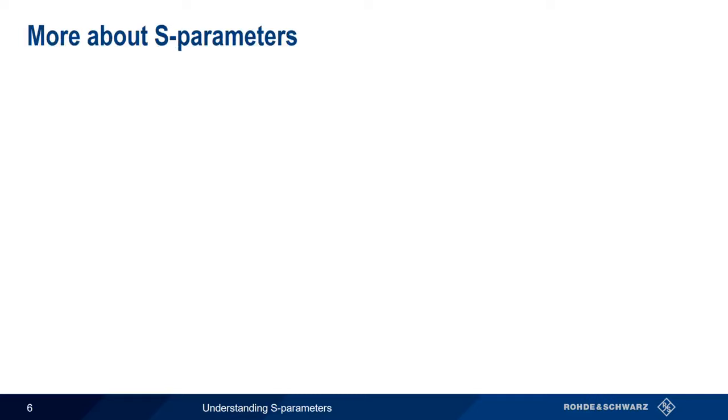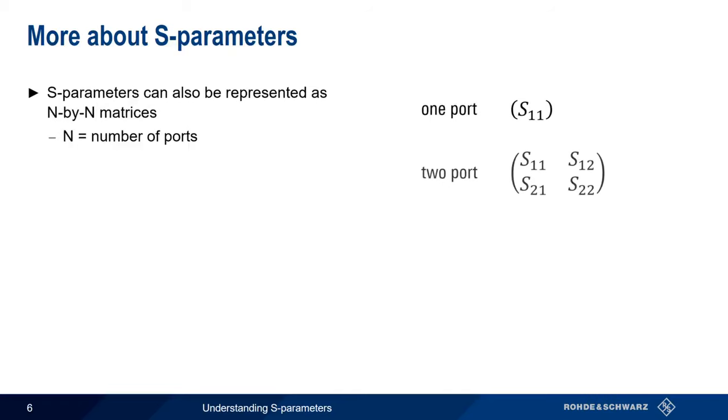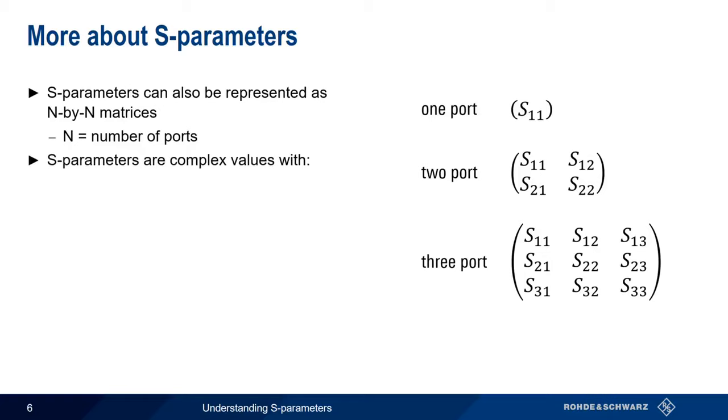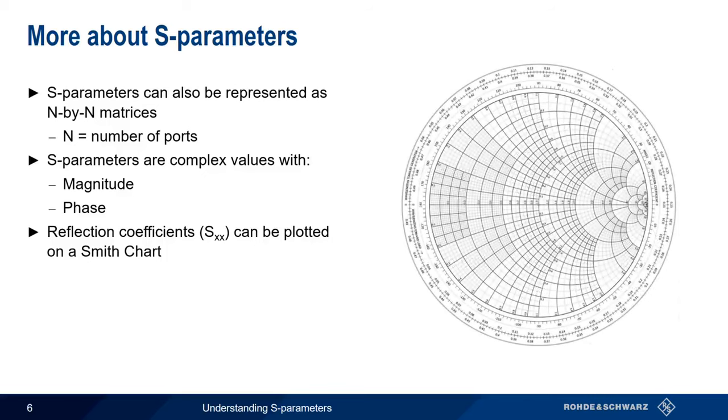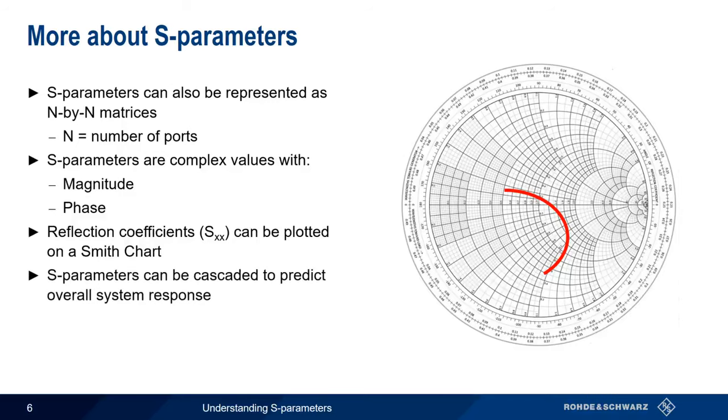There are a few other useful things to know about S-parameters. First, S-parameters are sometimes represented in the form of square N by N matrices, where N is the number of ports. For example, one port, two ports, and three ports. It's also important to remember that S-parameters are complex values, consisting of both a magnitude and a phase. The reflection coefficients, such as S11 and S22, are often plotted on a special graph called a Smith chart. And one of the main advantages of using S-parameters is that S-parameters of individual devices can be cascaded together to predict the overall performance of a system.